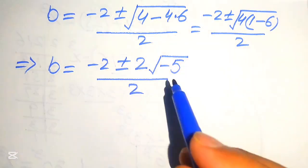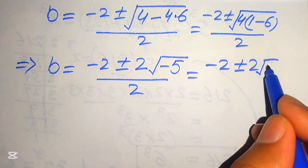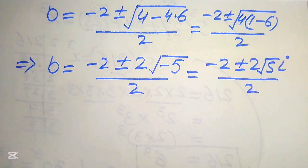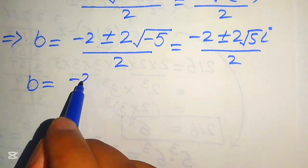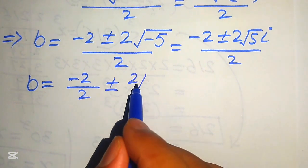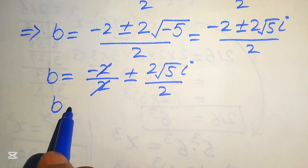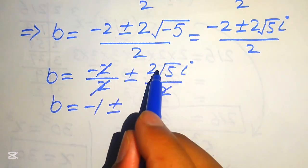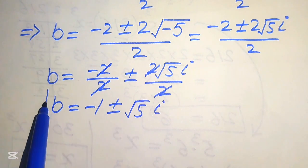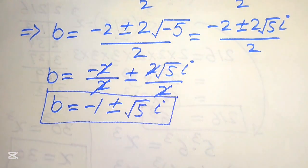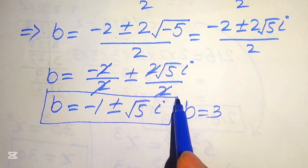Since we have a negative under the square root, we introduce iota (i), writing the expression as negative 2 plus or minus 2 times the square root of 5 times iota, divided by 2. Cancelling the 2s, we get b equals negative 1 plus or minus the square root of 5 times iota. These are the two complex roots. The three roots of the given equation are b equals 3 (real root), and b equals negative 1 plus or minus i√5 (complex roots).